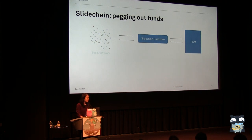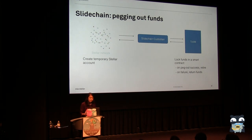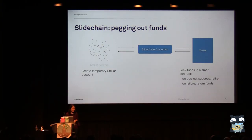Pegging out is the opposite. We create a temporary Stellar account on the network to ensure this peg-out can only happen once. In TXVM, we lock our funds in a smart contract where the operations are: if we see something suggesting the peg-out was successful, we retire the funds — just remove them from TXVM. If there's a failure, we return the funds to whoever sent them. Then we perform the actual peg-out, pay the amount to whoever it's going to, and merge this temporary account, which exists so this operation can only happen once.